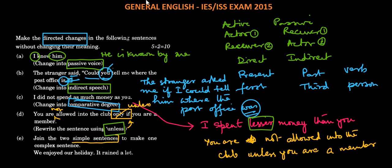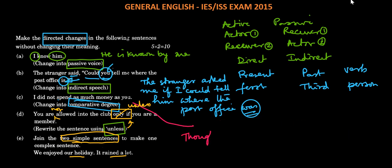Next: join the two simple sentences to make a complex sentence. The sentences are: We enjoyed our holiday and it rained a lot. So we can combine them by saying: Though it rained a lot, we still enjoyed our holiday.